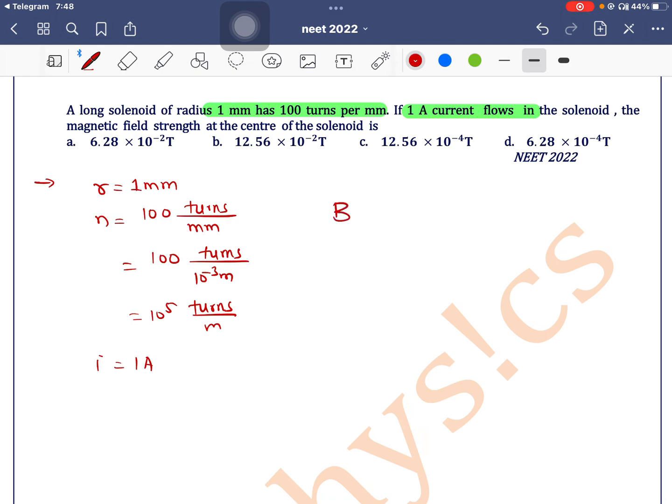So the formula for magnetic field at the center of the solenoid is B is equal to μ₀ni. μ₀ is 4π into 10 to the power minus 7, n is 10 to the power 5, current is 1.